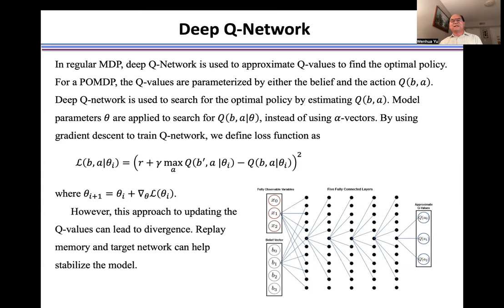We estimate the Q-value at the belief and action a. To use gradient descent to train the network, we define a loss function where one part is the target and another is the current value at belief and action a. Through gradient descent, we find the gradient of the loss function and update the network parameters until convergence.